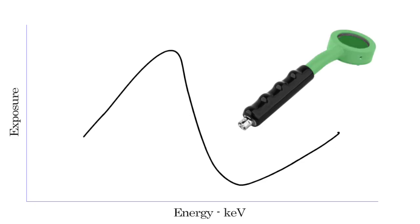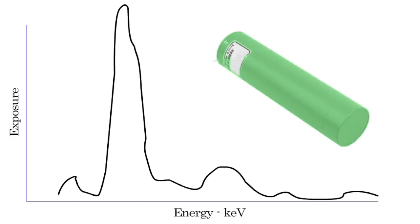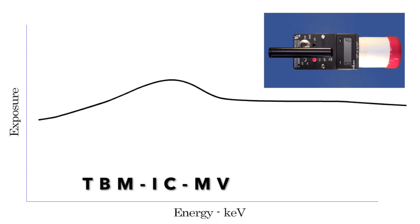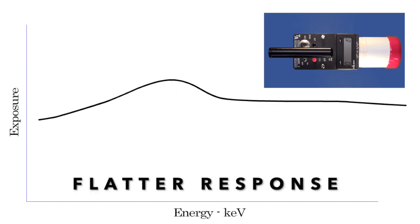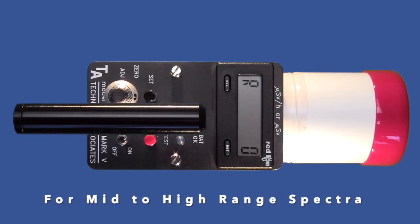Geiger-Mueller detectors can over-respond by up to 450%, and sodium iodide detectors can over-respond by up to 800%. Ion chambers such as the TBM IC Mk5 have a relatively flat energy response, providing a more accurate measurement of gamma x-rays in the mid-to-high range energy spectrum.